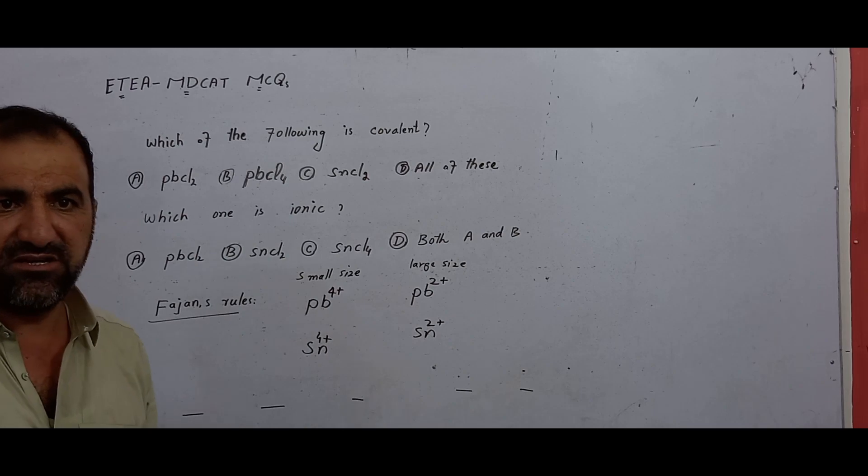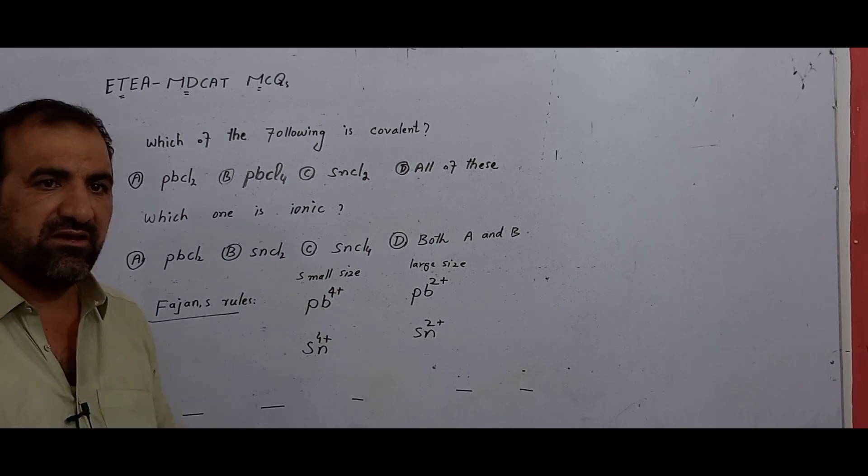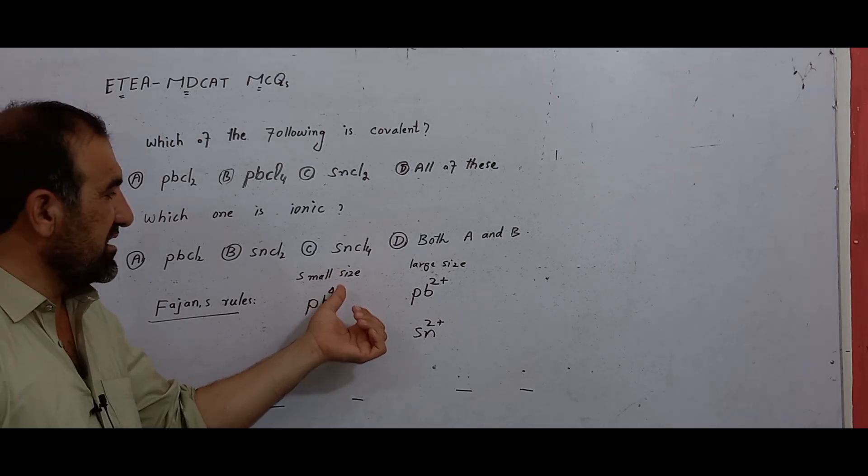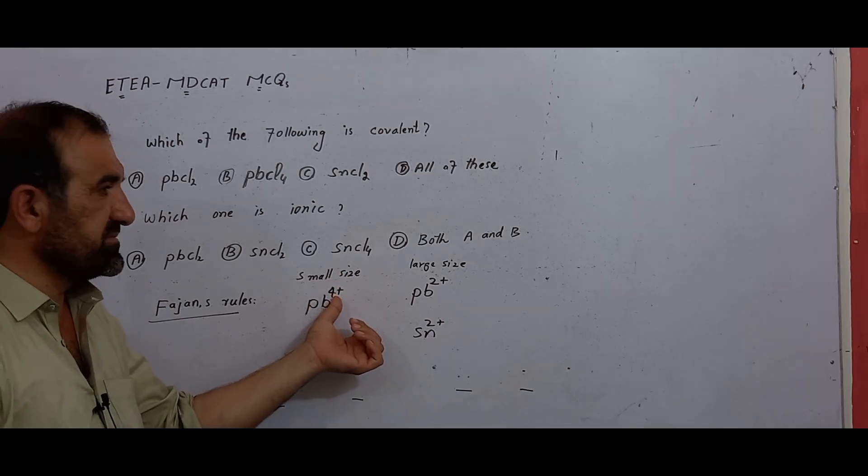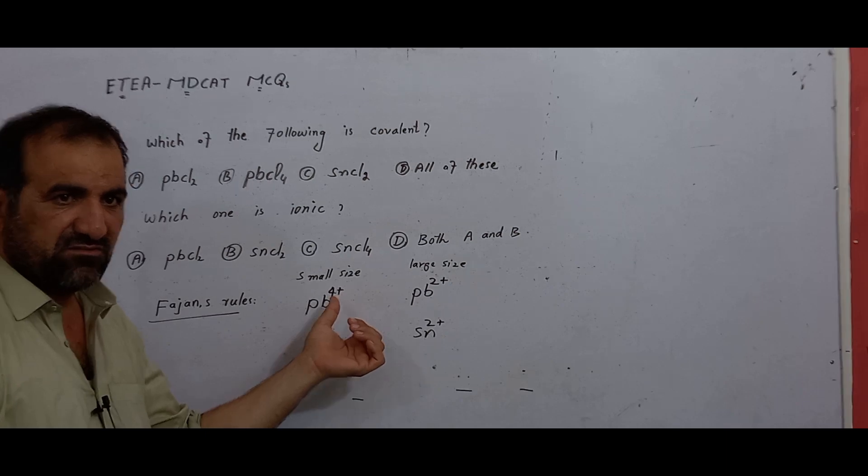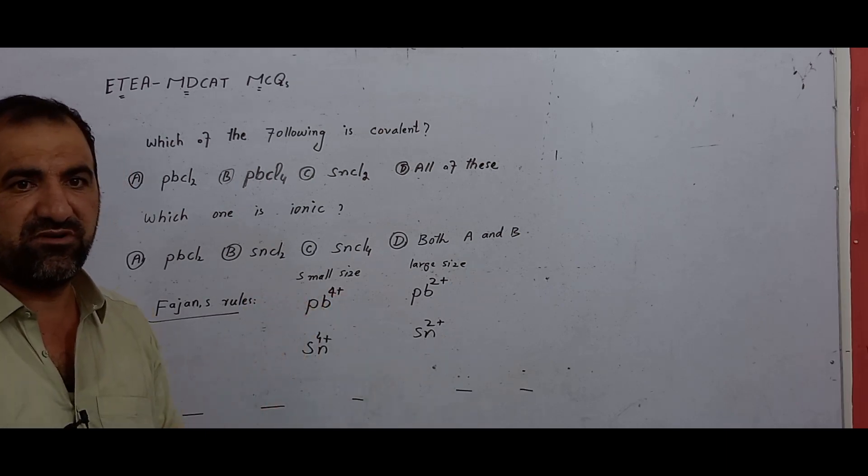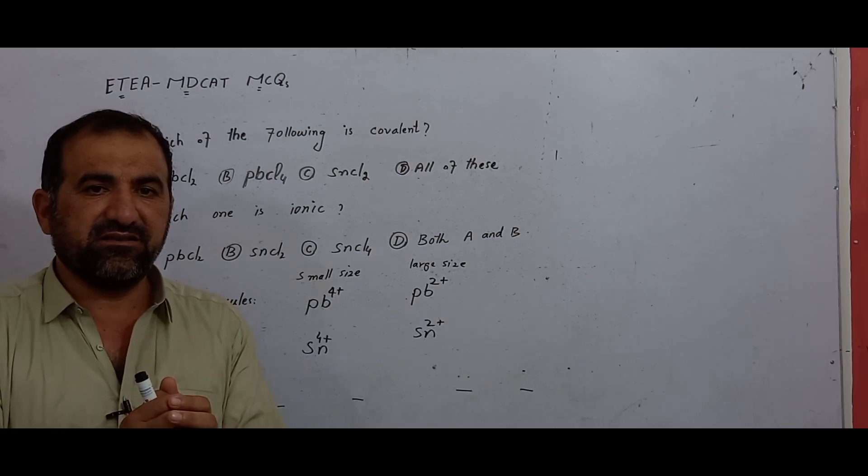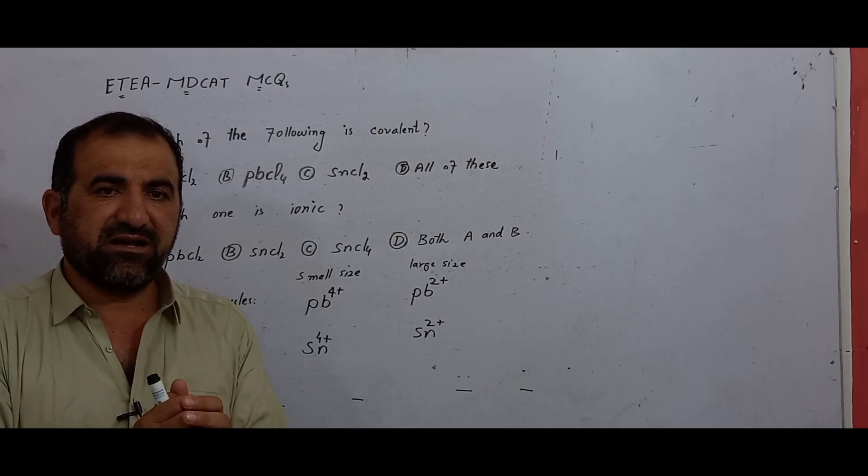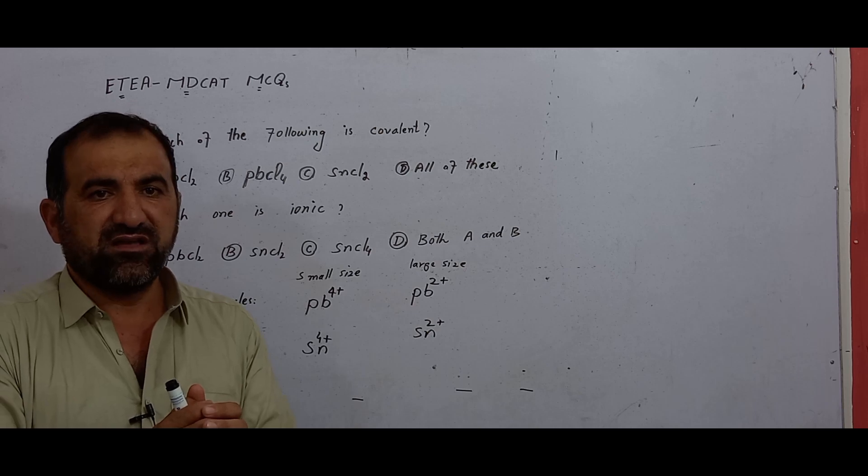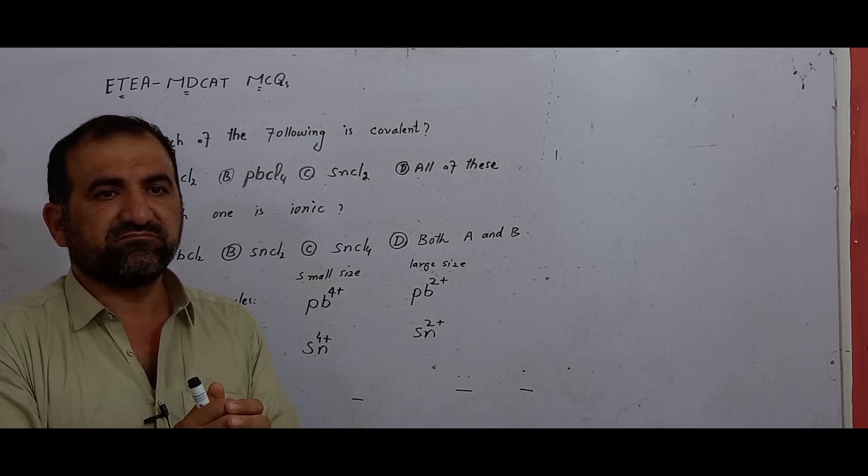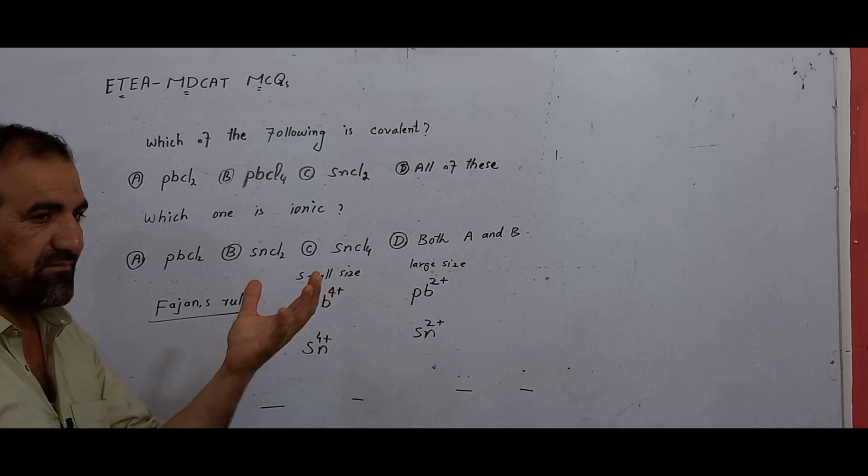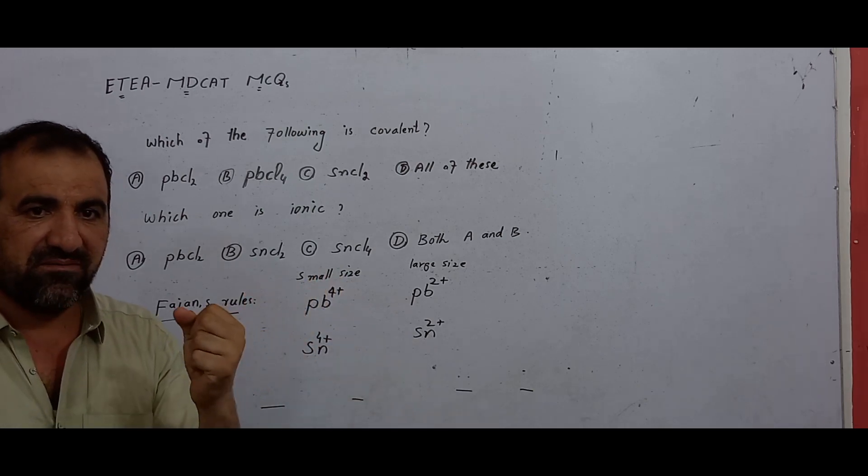Cations having small size and high charge density tend to form covalent bonds. So Pb plus four according to Fajan's rule forms covalent bonds.